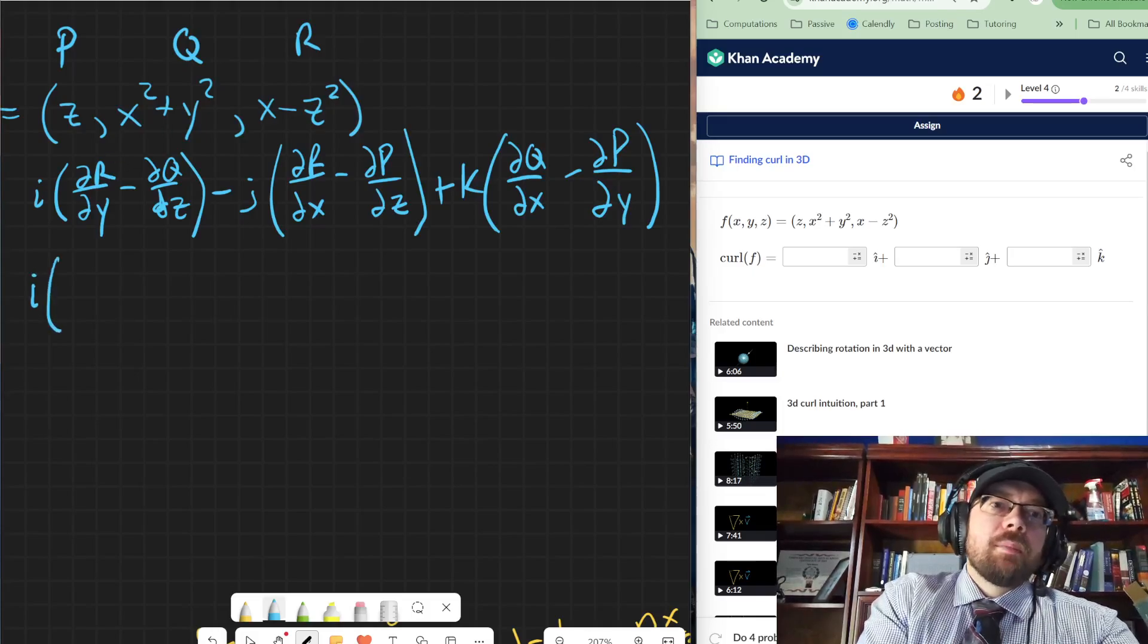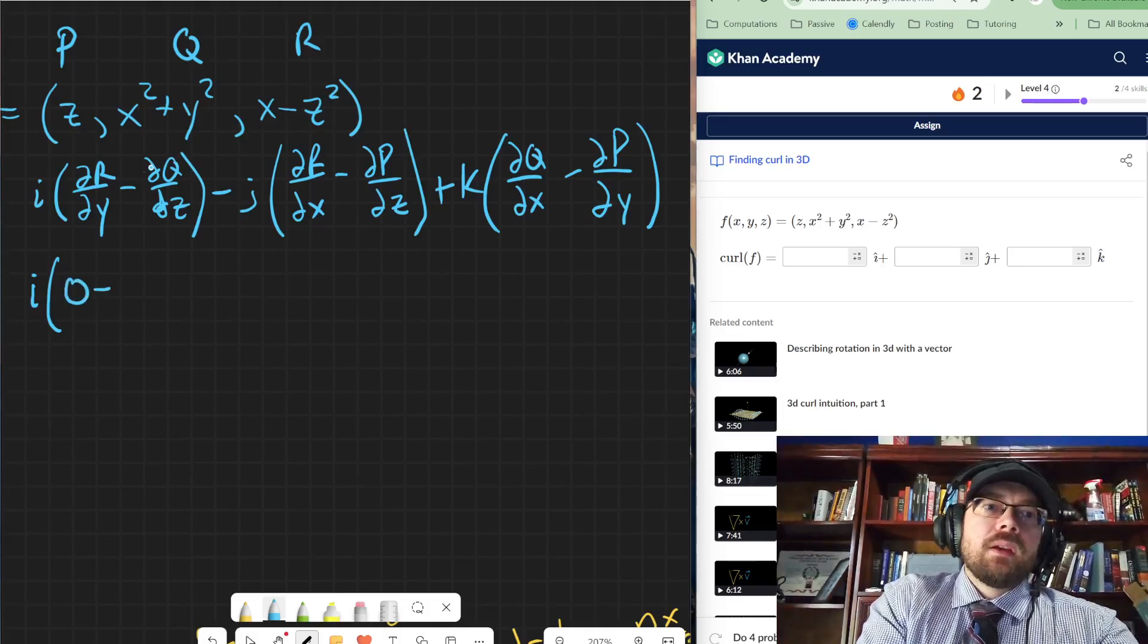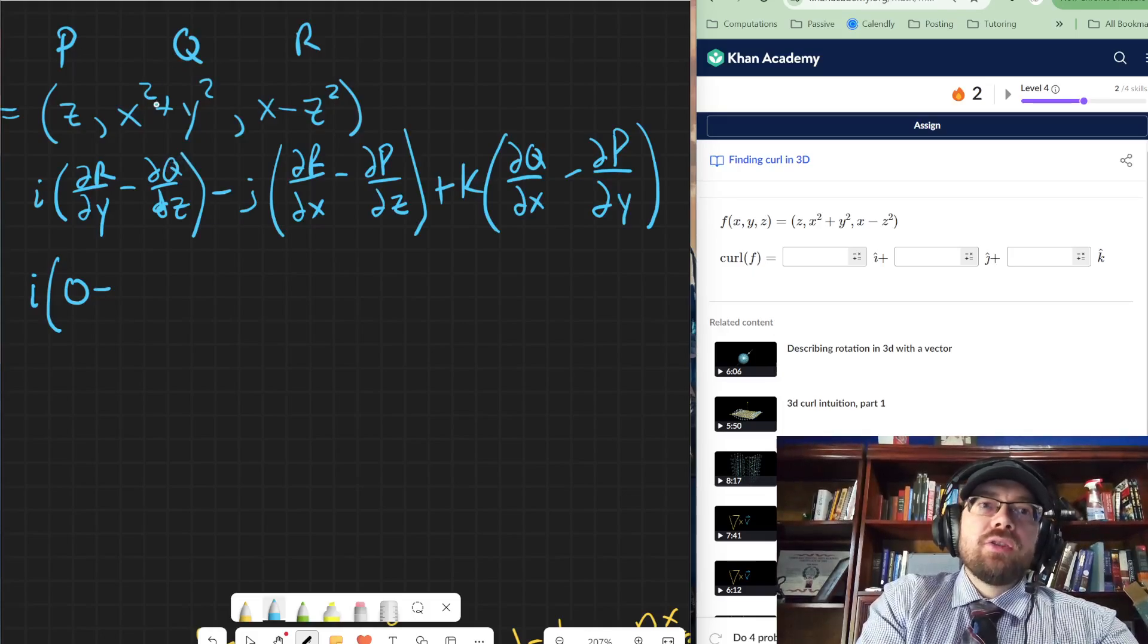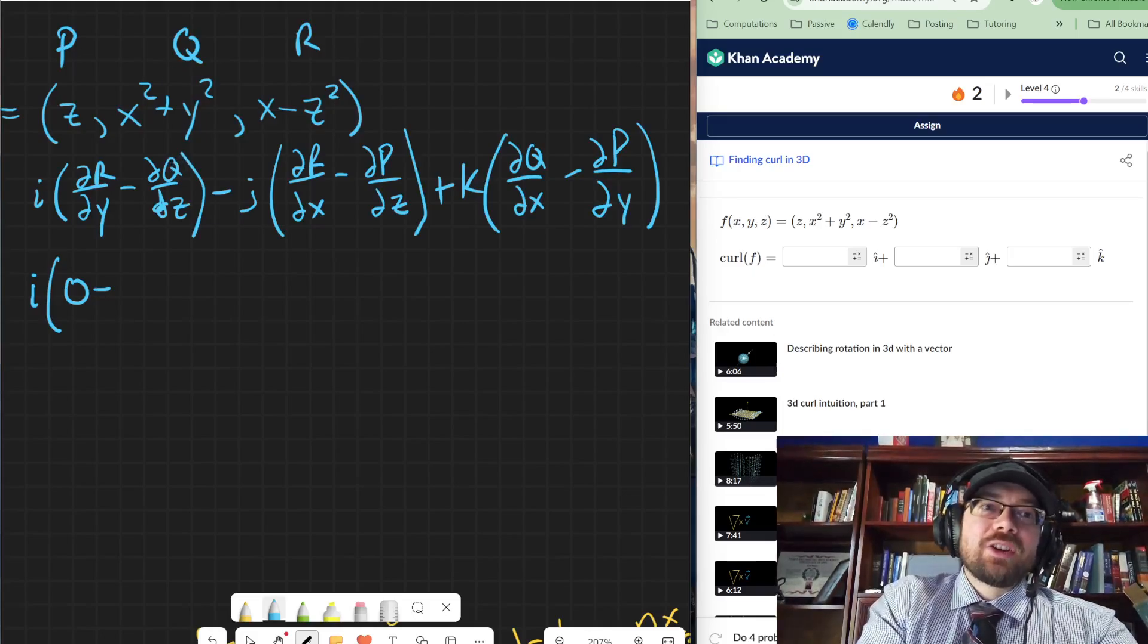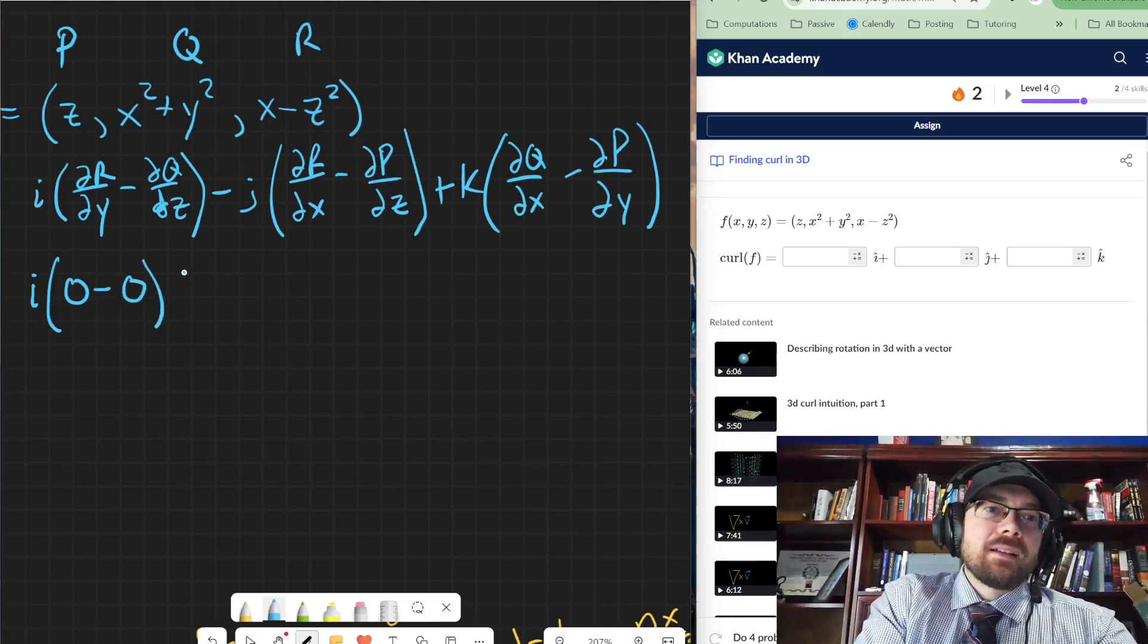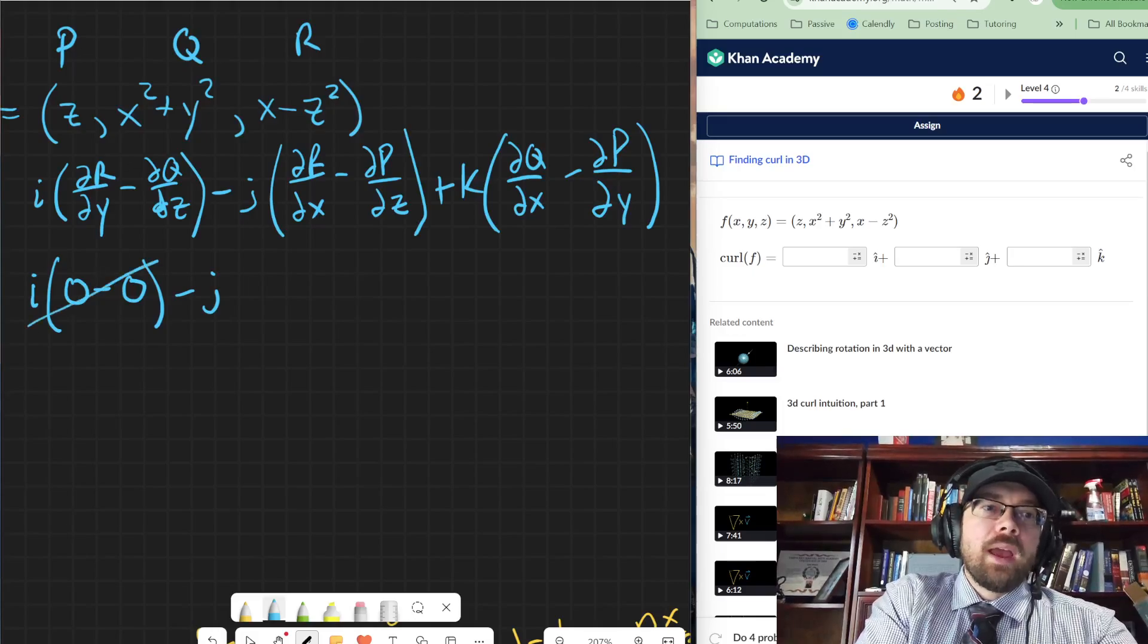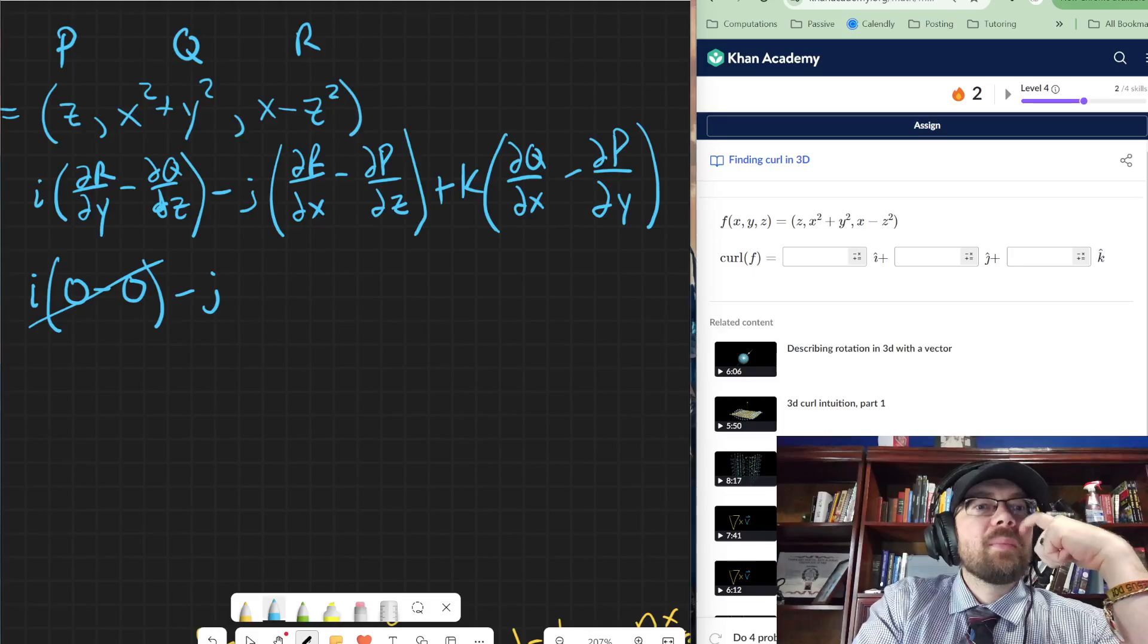So partial derivative of r with respect to y. Well, there's no y variable. So that one's just going to be zero. Then partial derivative of q with respect to z, there's no z variable. So that's just going to be zero again. So that whole thing is going to go away. So there's not going to be an i vector part to that.